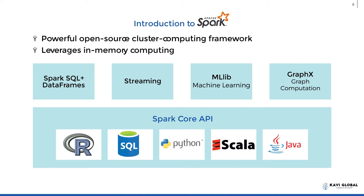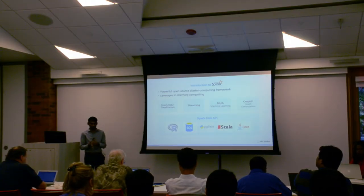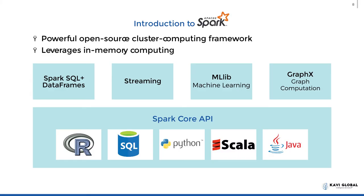The third part is the machine learning library, which is what we will be going through in detail today — this is for the advanced analytics. Once you have data available in any form or any place, you can crunch it and use it to do advanced prediction and text mining. The fourth library available in Spark is GraphX, the graph processing component. These four libraries are supported by five languages: you can write code in R, Python, Scala, Java, or SQL.